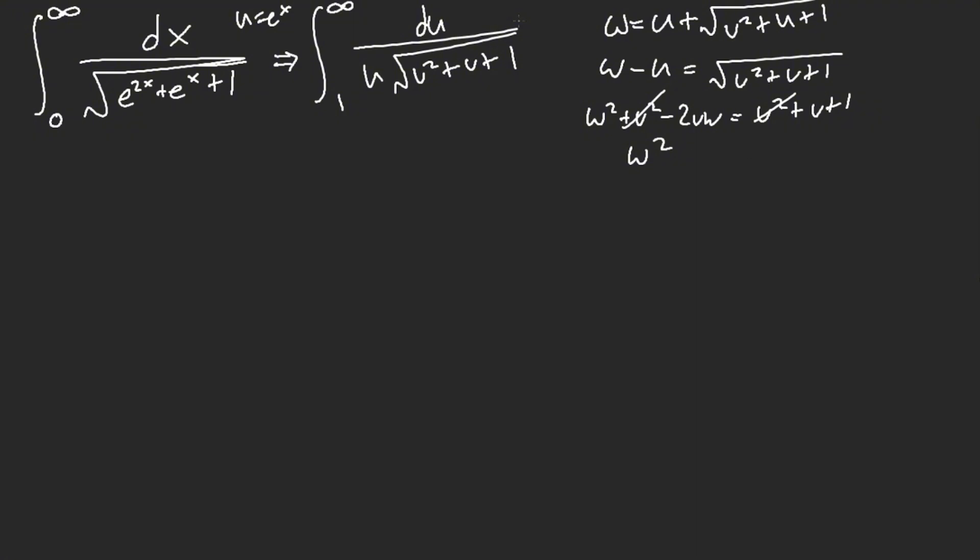So, we square both sides. We get w square plus u square minus 2u w equal to u square plus u plus 1. So, u square is going to cancel out. W square, grab that 1, and then put this to the other side. We have 2u w plus u, and you need to factor out that u. So, we get 2w plus 1. Now, we have w square minus 1, 2w plus 1 equal to u.